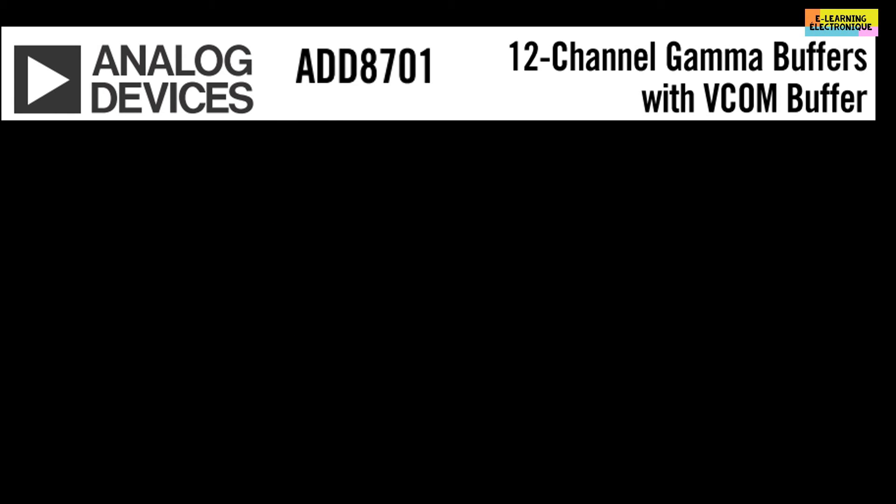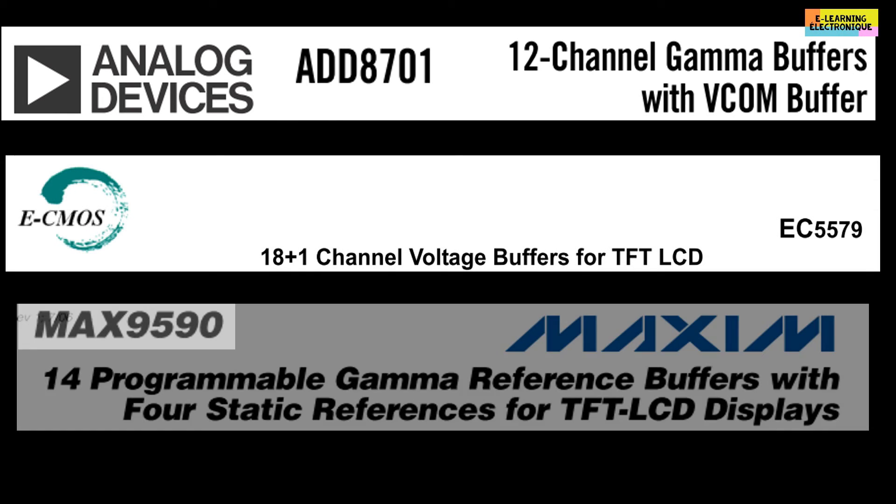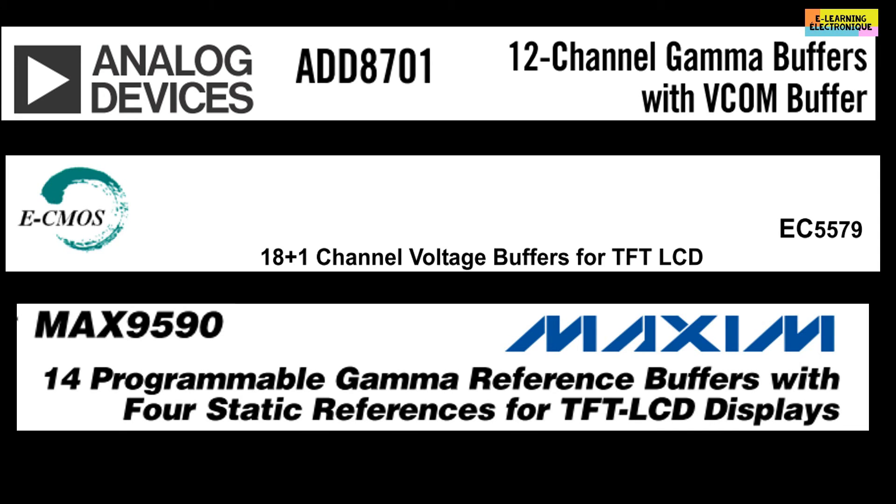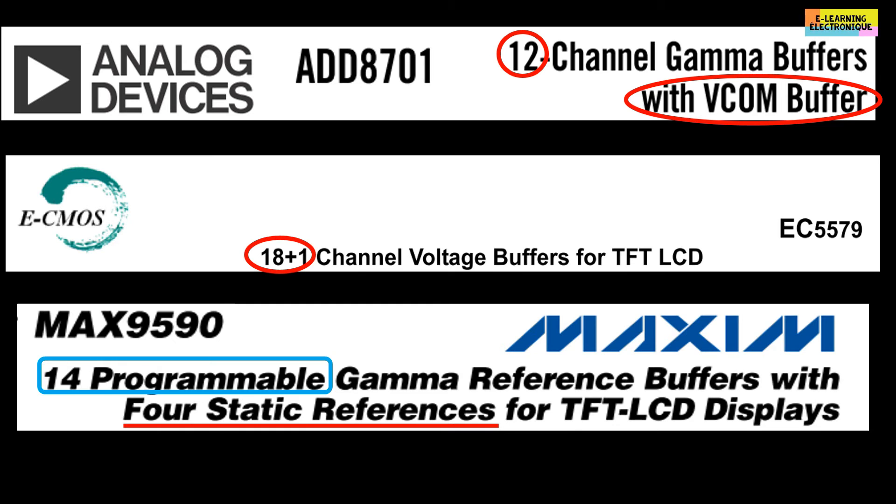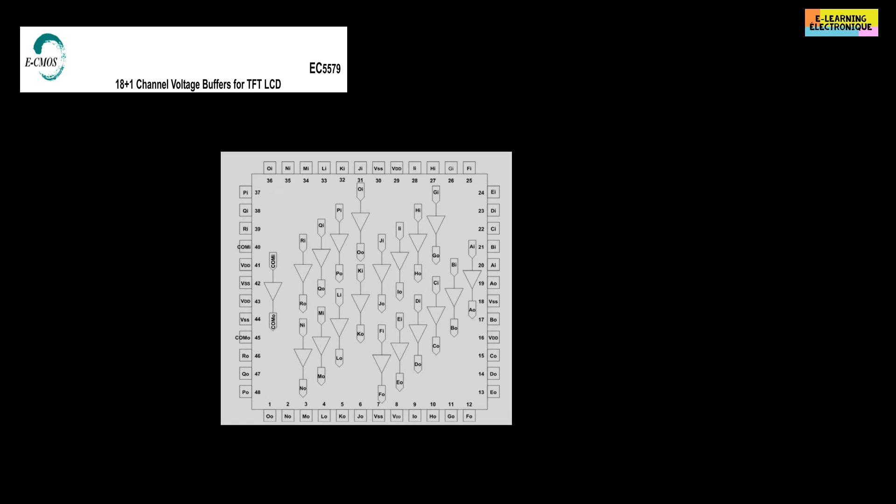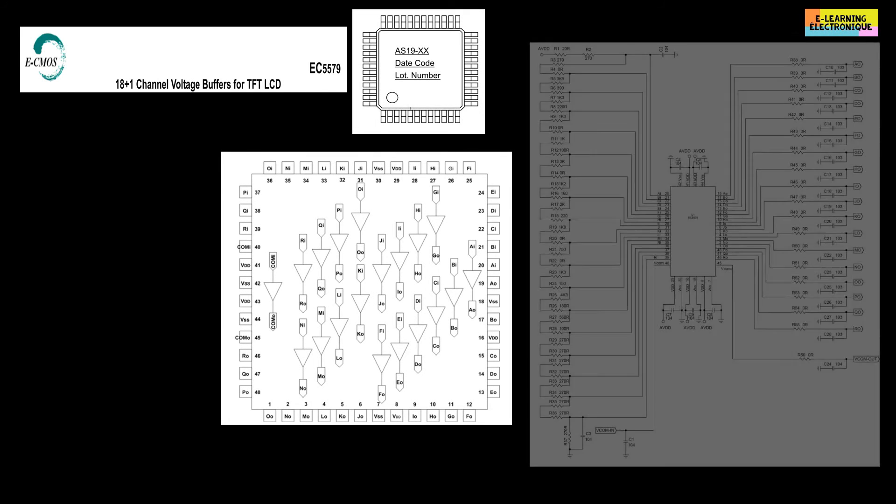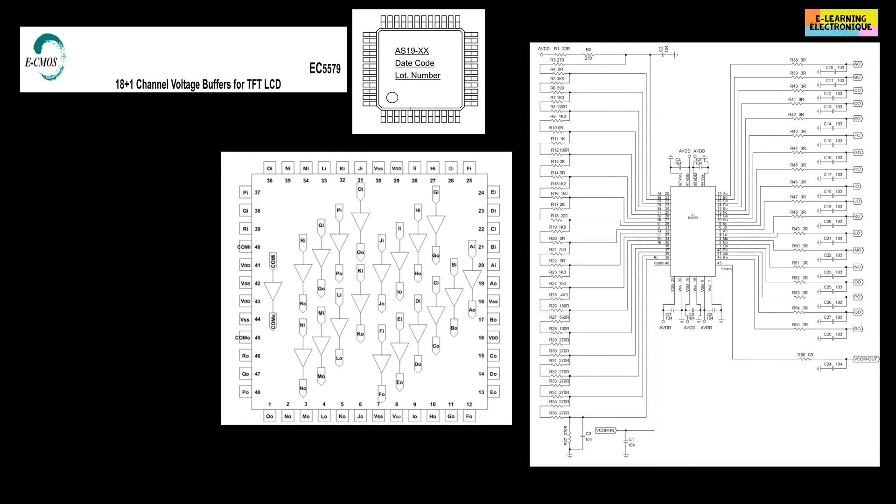That's it for the theoretical side. Now in practice when we read a datasheet of a gamma chip we see written the number of channels that the chip includes. Here we have three examples. For the first reference, there are 12 op amps reserved for 12 gamma voltages and 1 op amp reserved for the VCOM voltage. For the second reference, there are 18 for the gamma and 1 for the VCOM. The third reference is a little particular compared to the two previous ones. There are 14 gamma voltages but their production is said to be programmable and we will see this particularity later on. For the two first references the gamma voltages are not programmable but fixed.